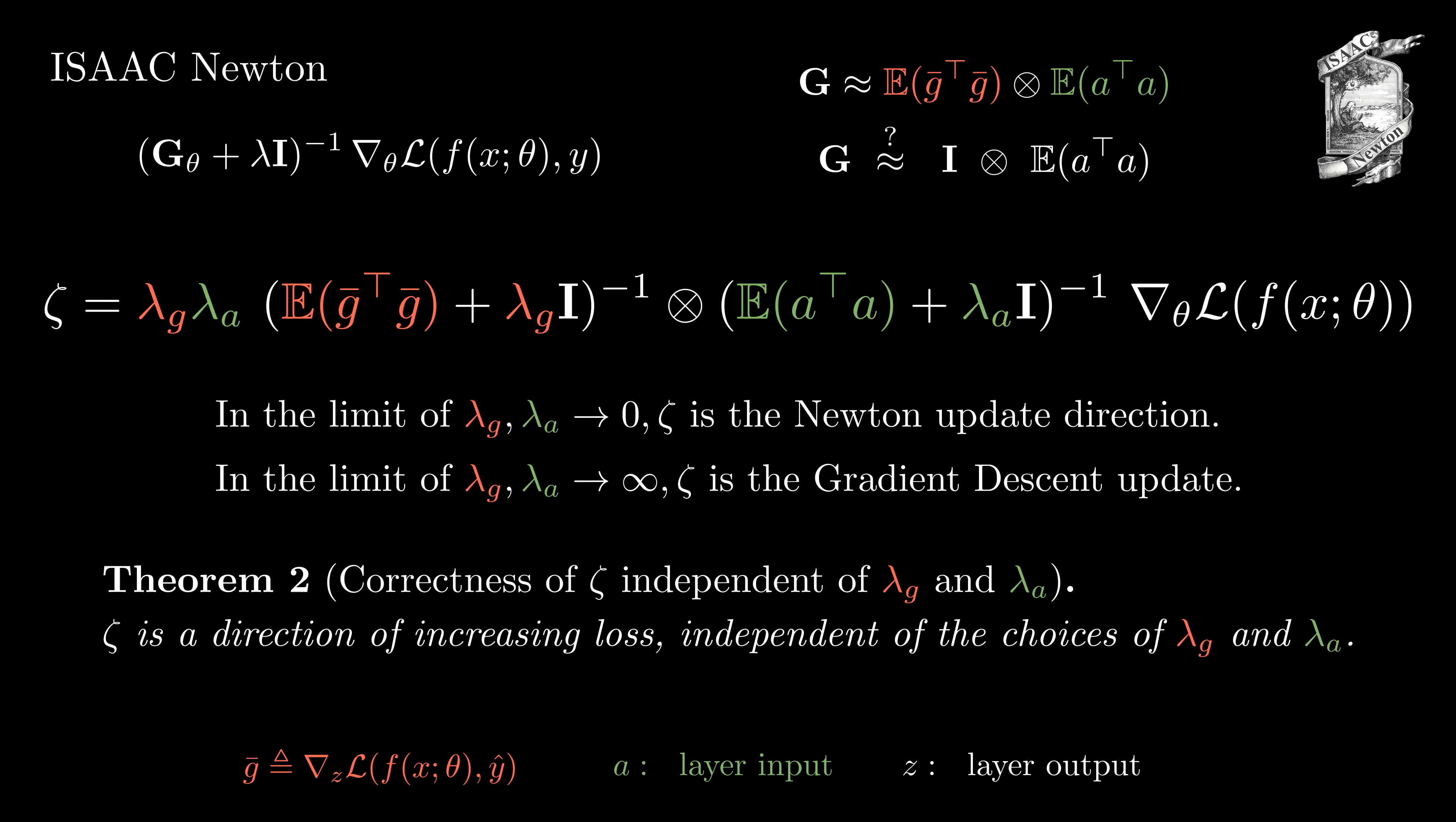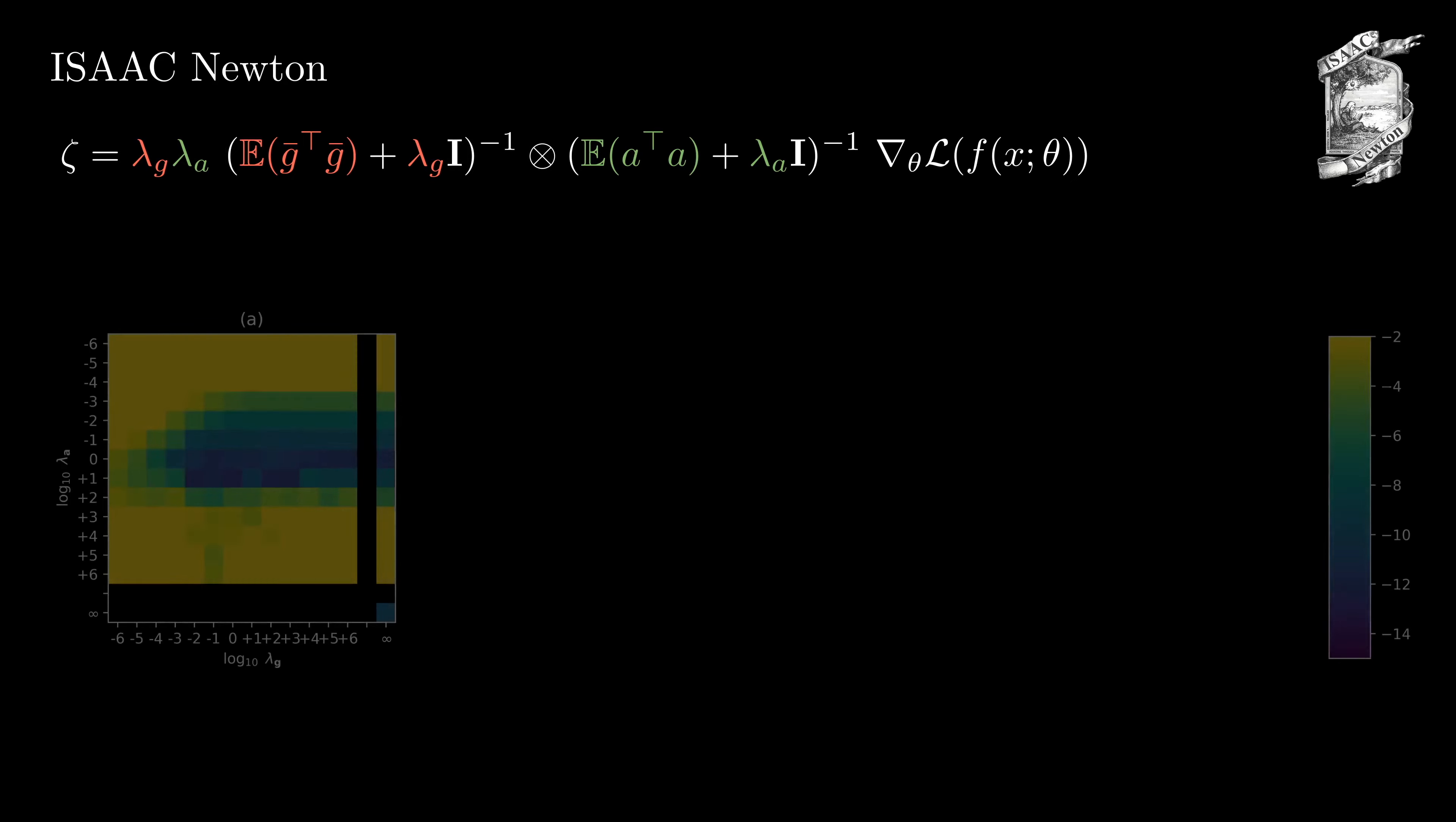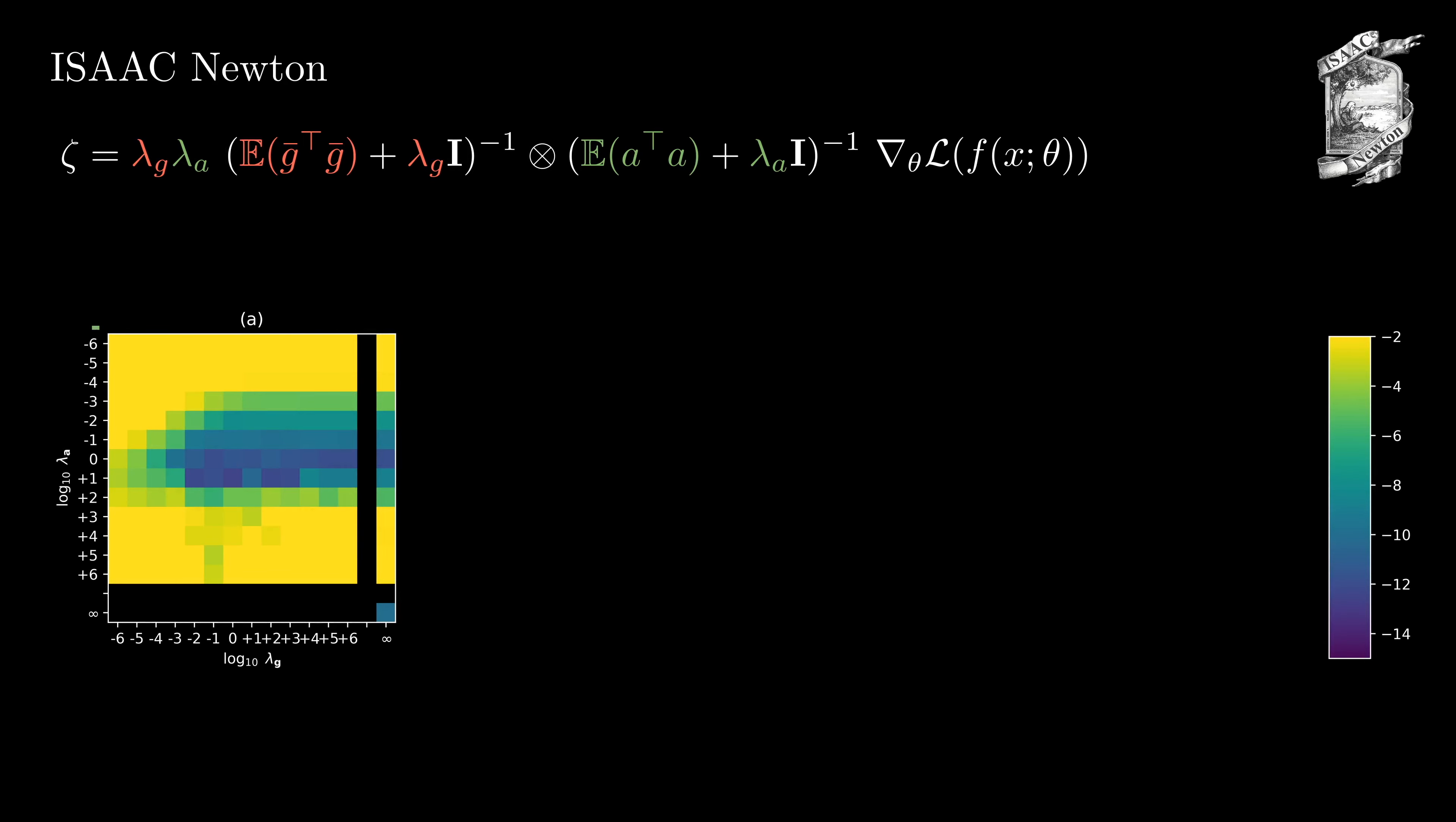Now, let's dive further into how well zeta actually performs depending on lambda g and lambda a by running some experiments. On the vertical axis, we show different choices of lambda a and on the horizontal axis, we show different choices of lambda g. For each setting, we use an independent training of the model. The color corresponds to the log loss of a classifier trained on MNIST, that is the lower and thus the darker or bluer, the better.